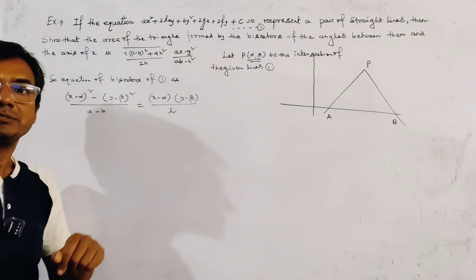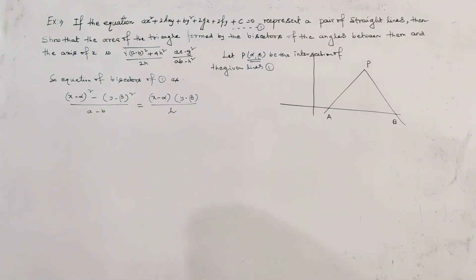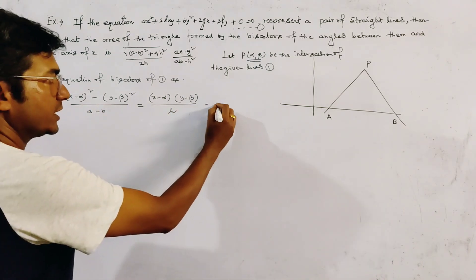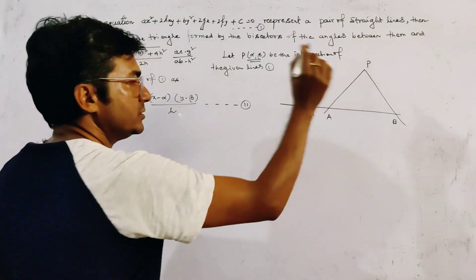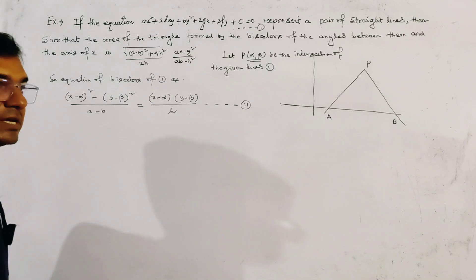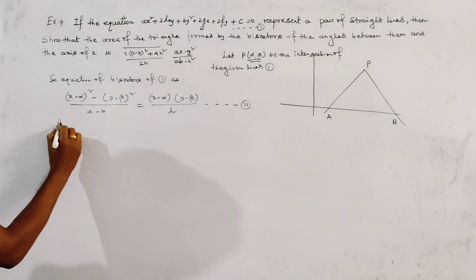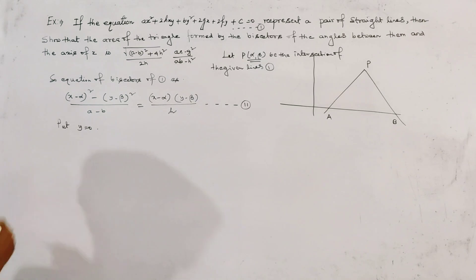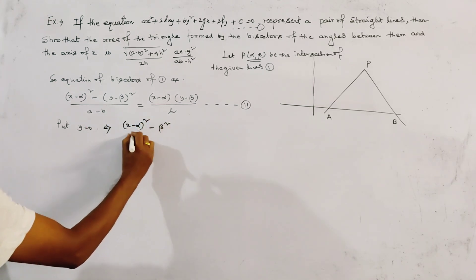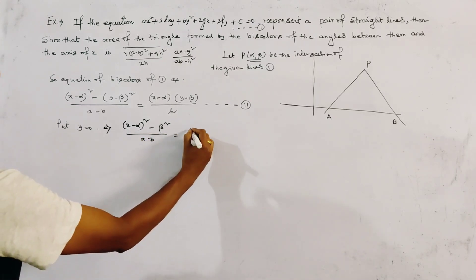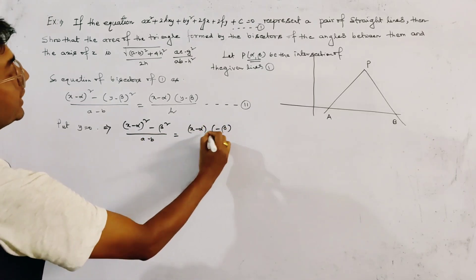To find the points of intersection of these bisectors with the x-axis, we put y = 0. The bisectors are PA and PB. Substituting y = 0 gives: (x − α)² − β² / (a − b) = (x − α)(−β) / h.